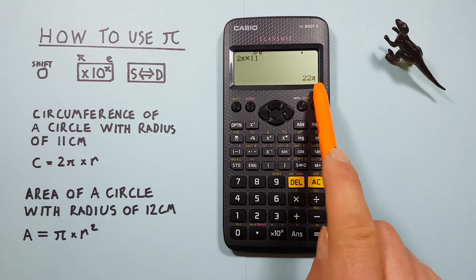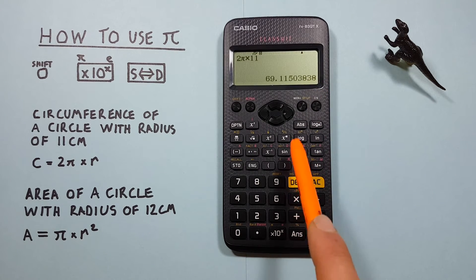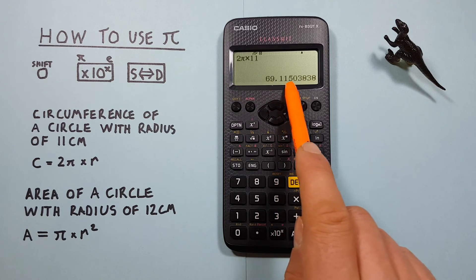And if we want that in decimals, again we just hit the conversion or S to D key. And we see we get 69.115 etc.